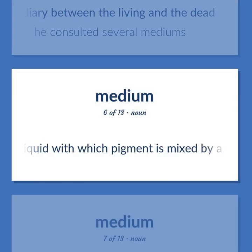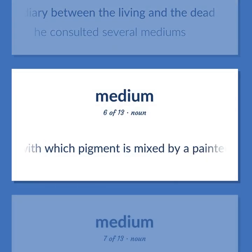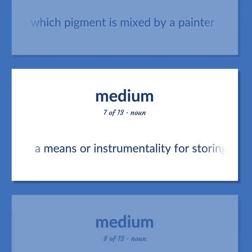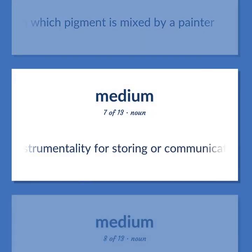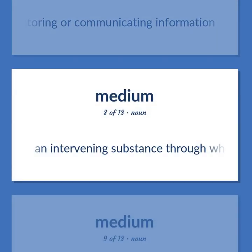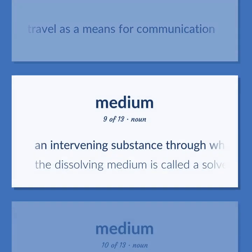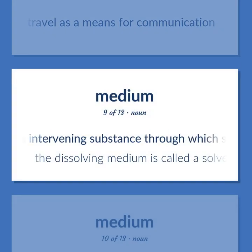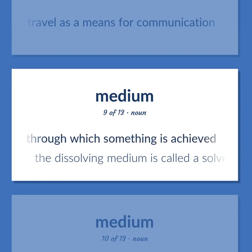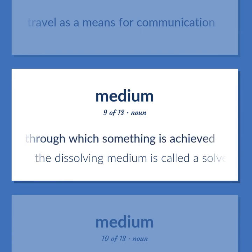Medium (noun): A liquid with which pigment is mixed by a painter. A means or instrumentality for storing or communicating information. An intervening substance through which signals can travel; a means for communication. Also: an intervening substance through which something is achieved. Example: The dissolving medium is called a solvent.